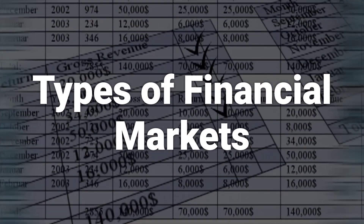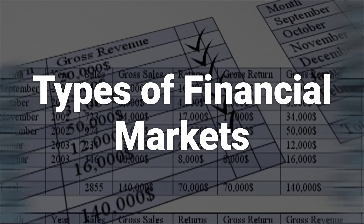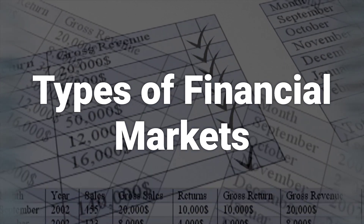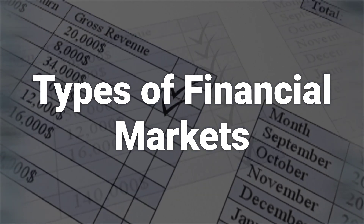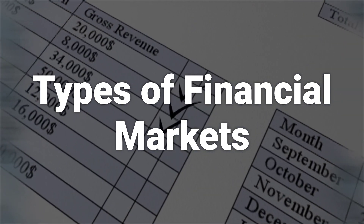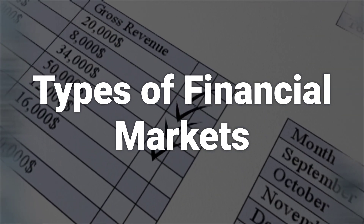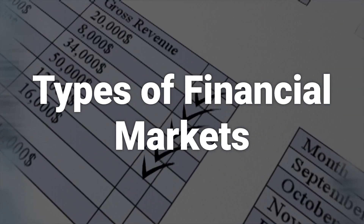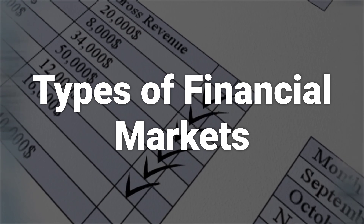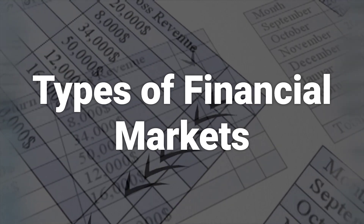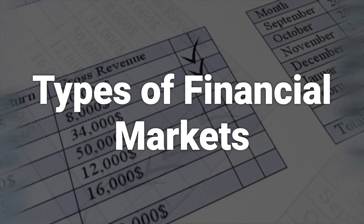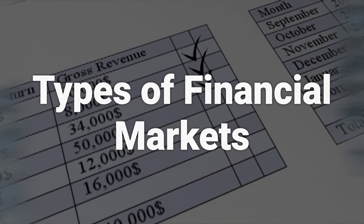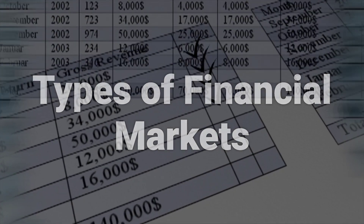There are several types of financial markets, such as stock markets, over-the-counter markets, bond markets, money markets, derivatives markets, forex markets, commodities markets, and cryptocurrency markets.